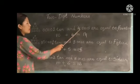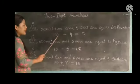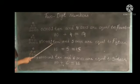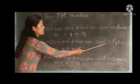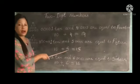1 ten and 4 ones are equal to 14. 10 plus 4 are 14. 1 ten and 5 ones are equal to 15. 10 plus 5 are 15.